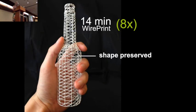Using WirePrint I can actually have a first version of this quality in only 14 minutes, which is 8 times faster than traditional printing. And since WirePrint preserves the overall shape of the object, I can actually quickly test things such as ergonomic criteria.